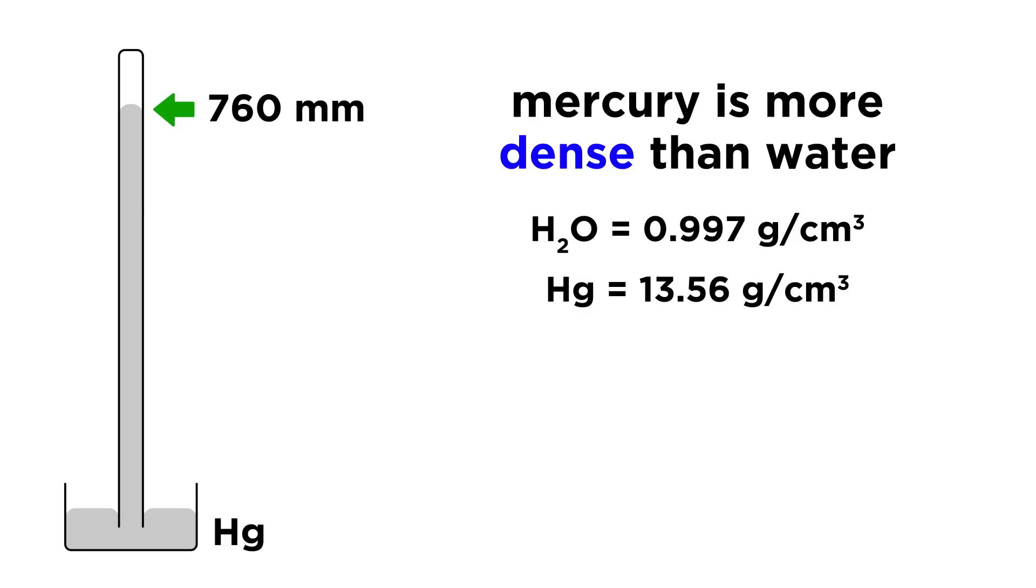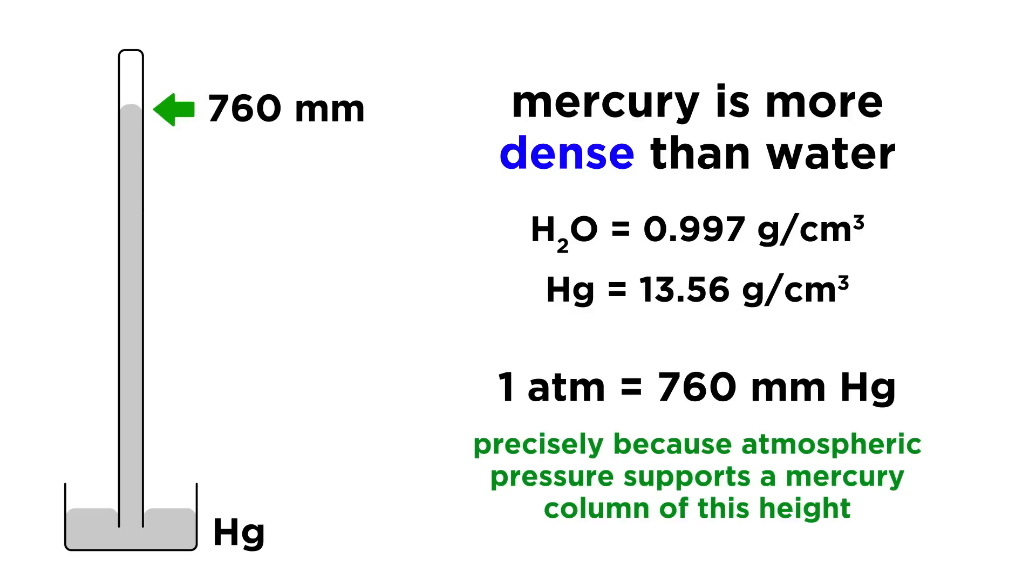In fact, atmospheric pressure will support a column of mercury that is only 760 millimeters tall, and this relationship between the height of a column of mercury in a barometer and atmospheric pressure is where we get the conversion between atmospheres and millimeters of mercury as units of pressure.